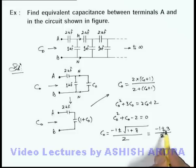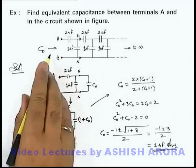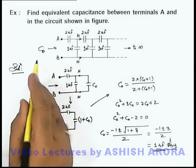And if we ignore this negative sign it'll be 3 minus 1 that is 2 by 2 so final result will be 1 micro farad that'll be the answer to this problem. This 1 micro farad is the capacitance of this infinite ladder circuit which we have represented as C₀.